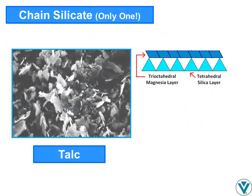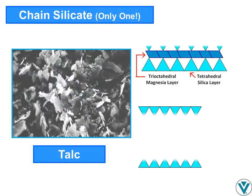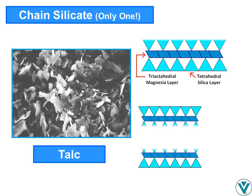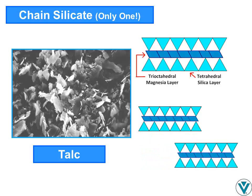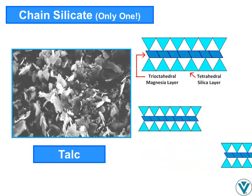If a sheet of silica rings is attached to the magnesia side of the 1:1 tri-octahedral structure, the bending tendencies on either side of the octahedral layer are balanced. The mineral structure remains planar and talc results. Individual talc plates are held together by weak van der Waals forces, and sliding and delamination are fairly easy, giving talc its characteristic soft, slippery feel.